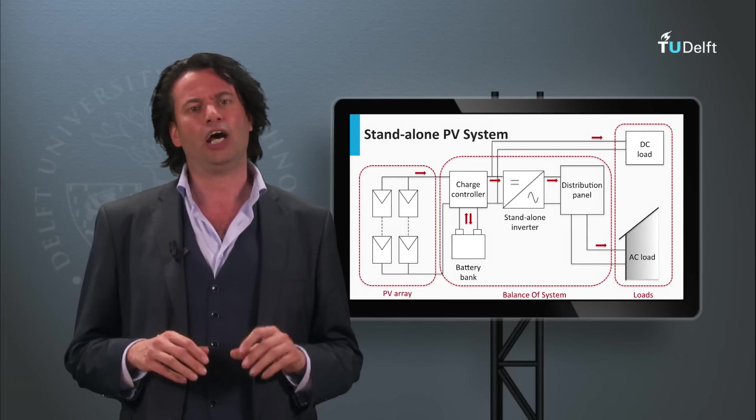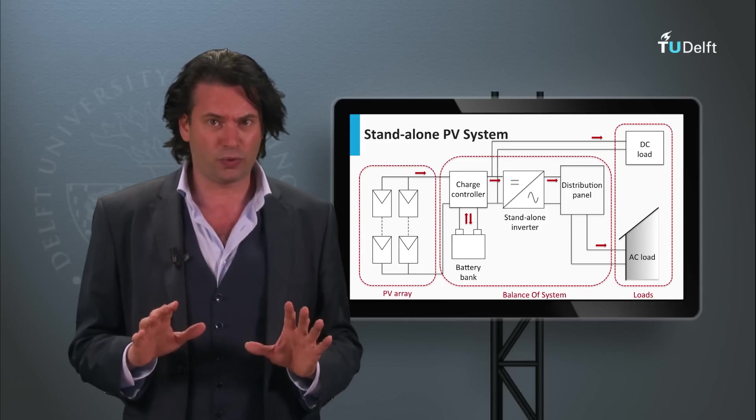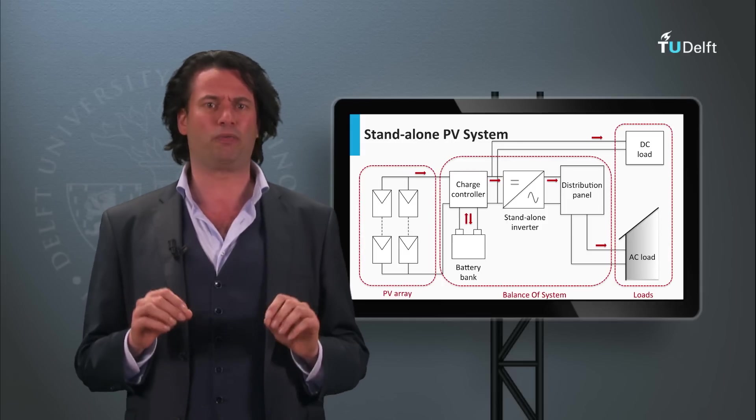Welcome back to the last week of this course. In week 7 you saw the various PV system components and their characteristics. Now we will see how these components come together and make up a PV system. We will not only look at the characteristics of these PV systems, but also look at some of their basic design rules. We will first start with the stand-alone PV system.